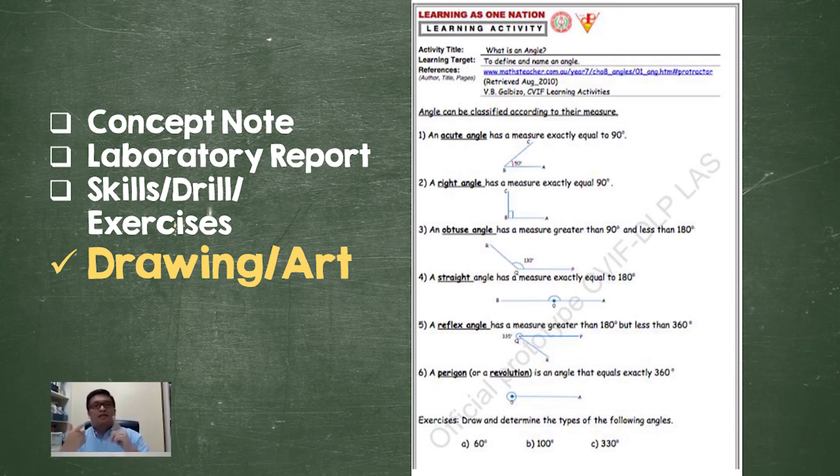You see here the learning activity sheets, even though they have a basic model wherein you have the concept digest, the example, and the exercise, it can come in many forms. We can have concept notes when we present new lessons, laboratory reports for our science subjects, skills drills and exercises when we think that additional activities are needed, and lastly drawing and art. There are many different types, but most of the time these are the four types that we have for the learning activity sheet.